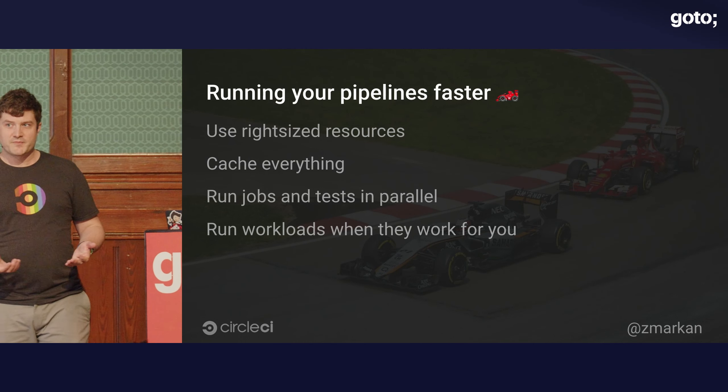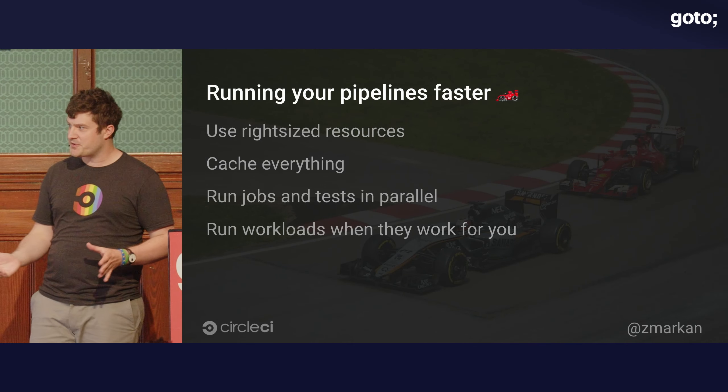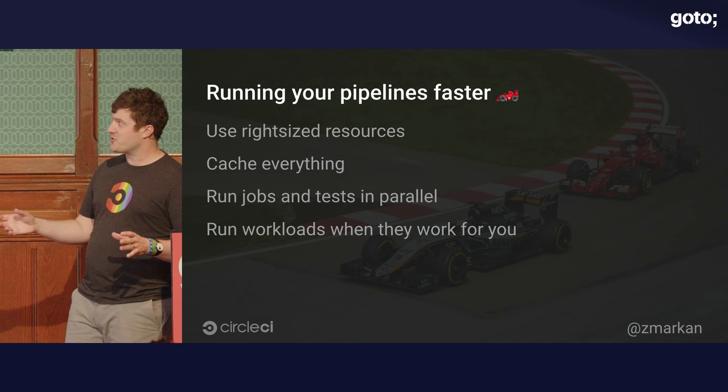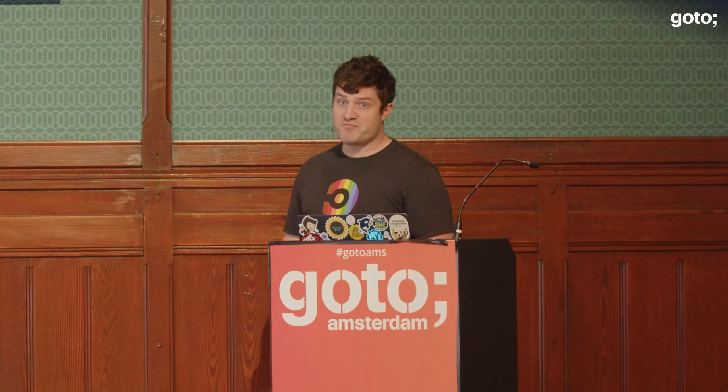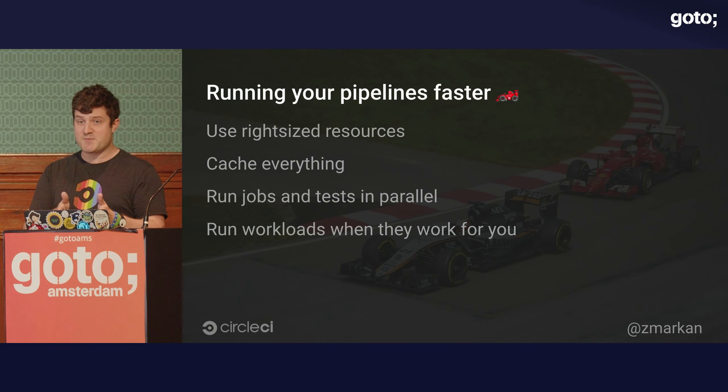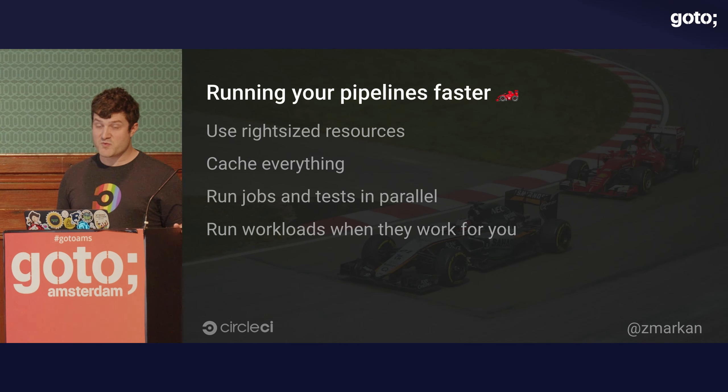Thirdly, run things in parallel. In this brave new cloud-based world, we have an enormous amount of resources at our disposal that can just be spun up and torn down. This means we can run things in parallel as much as possible — all your different types of tests, unit tests, integration tests, security scanning jobs. You can have them run in parallel so you get the end results as fast as possible, as opposed to running one after the other and then collating results.